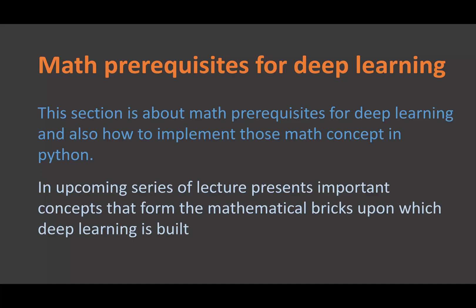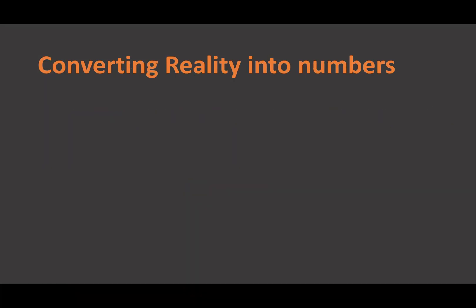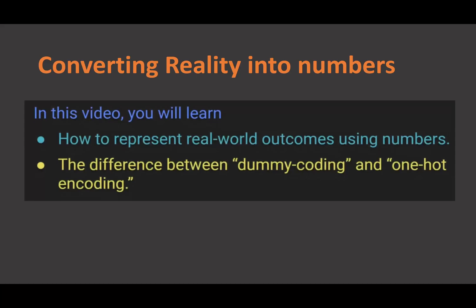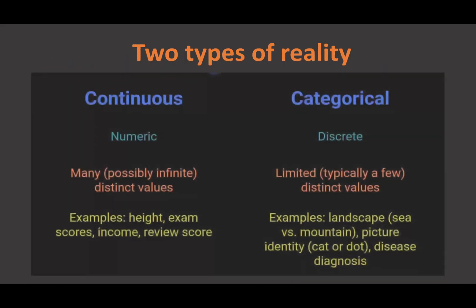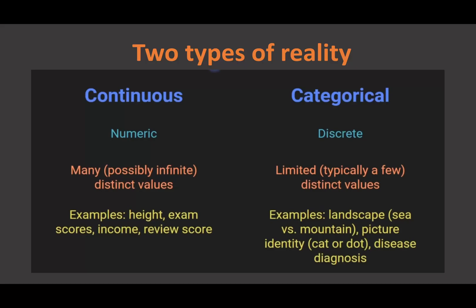This video is all about how to represent real-world outcomes using numbers, and the difference between dummy coding and one-hot encoding. There are two types of reality: one is continuous and the second is categorical. Continuous reality means we can represent it using a number — a numerical value, possibly infinite distinct values — for example, height, exam scores, income, or review scores.